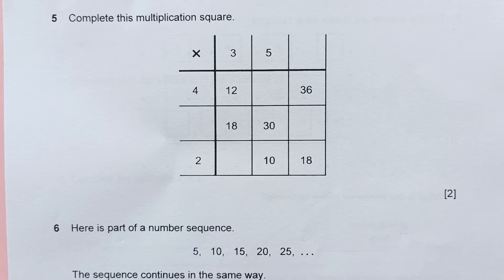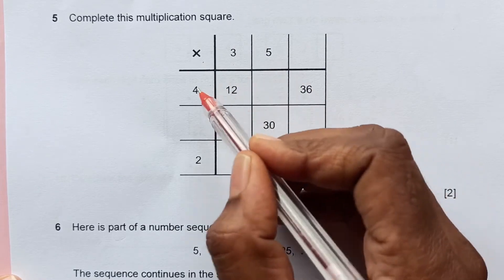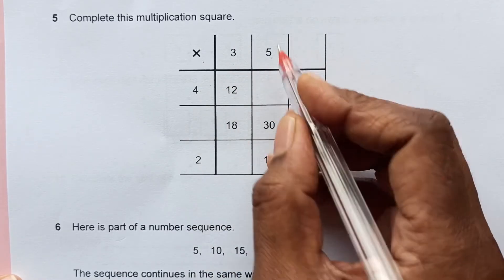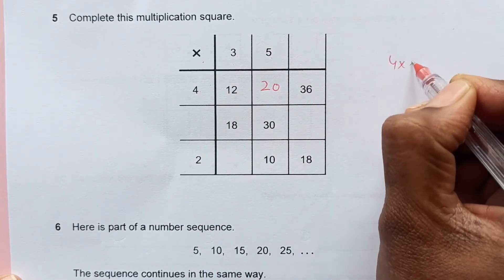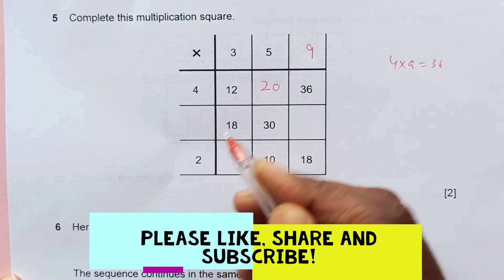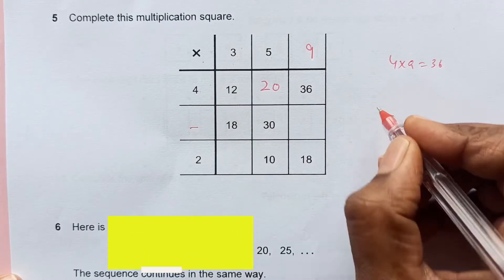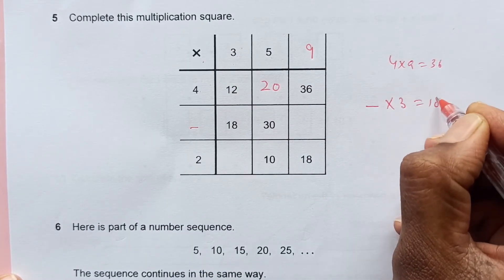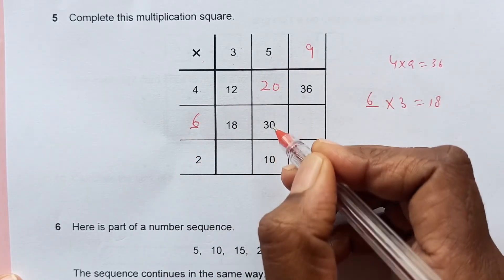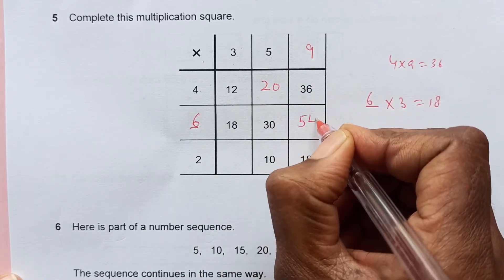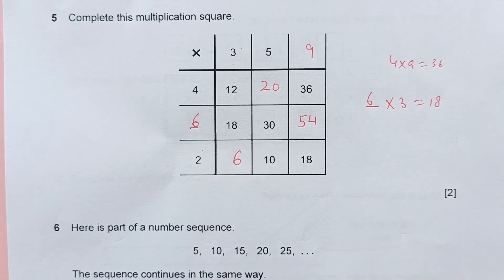Number 5. Complete this multiplication square. We have the multiplication sign here. We just multiply: 4 times 3 is 12, 4 times 5 is 20. 4 times what gives 36? 4 times 9 is 36, so 9 goes here. Something times 3 is 18, so that's 6. 6 times 3 is 18, 6 times 5 is 30, 6 times 9 is 54. 2 times 3 is 6. The rest of the numbers are already there.